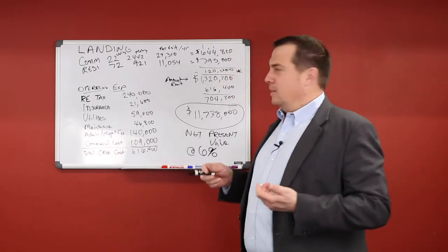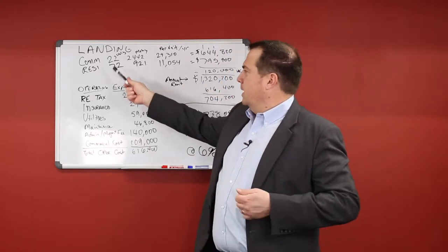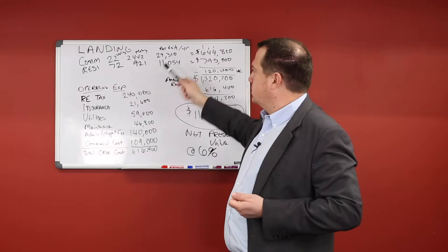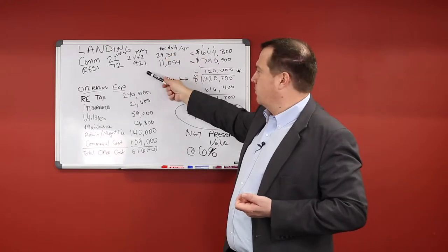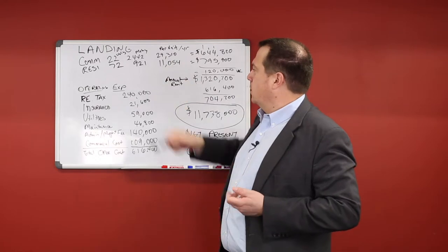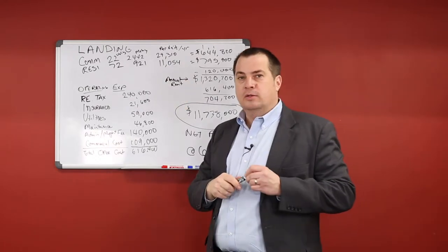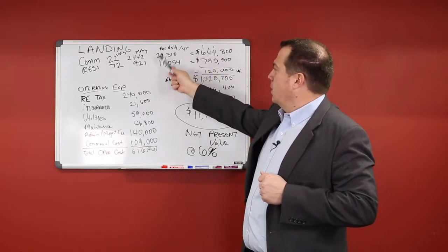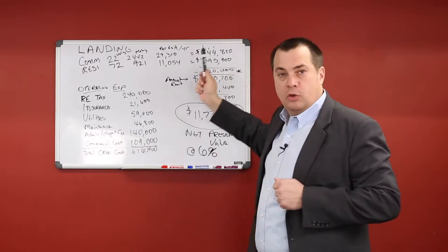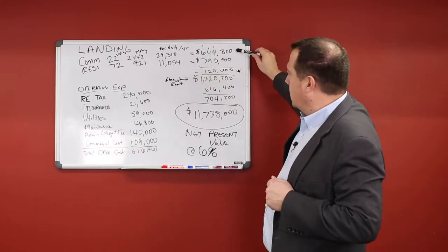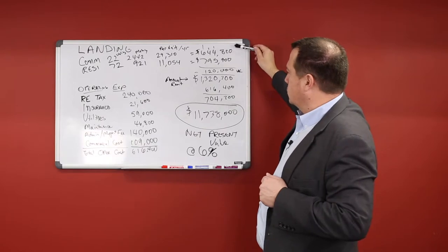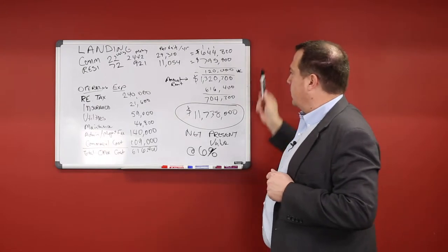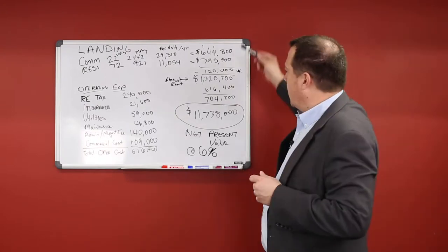Basically, it's just the revenue. The landing had in their pro forma 22 commercial units, 72 residential units. The monthly rents that they were expecting was averaged at $921 for the residential units, $2,442 a month for the commercial units. That came to $11,000 for the residential per year, $29,300 for the commercial units per year. You can see the total rent for the commercial units was $644,000, and $796,000 for the residential. You add those up,